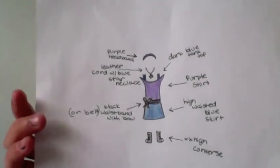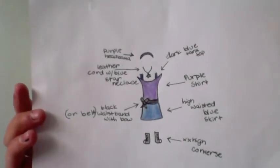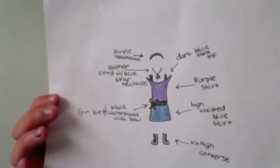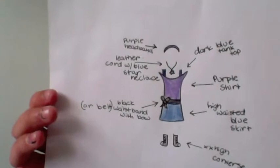The main shirt for this outfit is purple and it has sleeves that come off your shoulders. Underneath is a regular dark blue tank top.